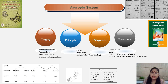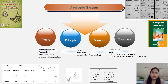Shushrut was the first to suggest using wine and cannabis to induce anesthesia — the first such mention in the history of medicine. Shushrut also suggested the use of dead body dissection to learn about the human body more effectively, which is also the first time in the history of medicine.